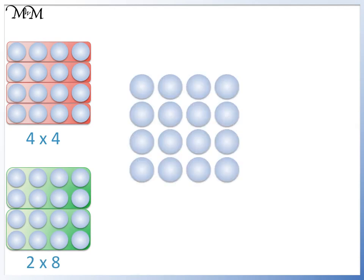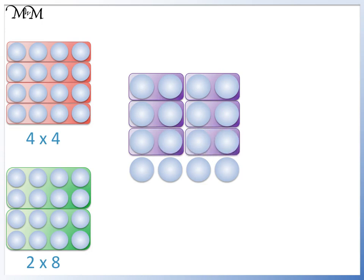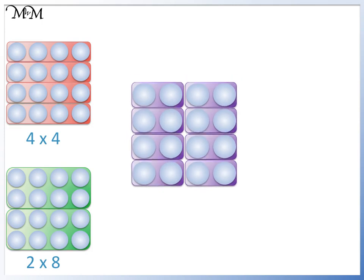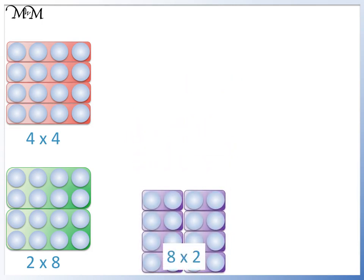This time, we will group the counters into 2s. We have 1, 2, 3, 4, 5, 6, 7, 8 groups of 2, so we have 8 times 2.